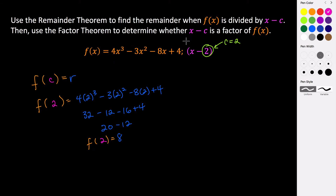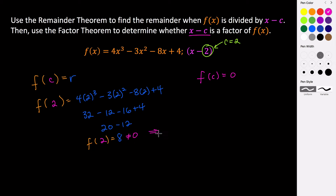So what does that tell us about x minus c? Using the factor theorem — the factor theorem says that if we divide a polynomial function by some factor x minus c, then x minus c will be a factor of that polynomial function if and only if f of c is equal to 0. So using the remainder theorem, if we end up with a remainder of 0 that tells us x minus c is a factor. Because f of 2 is not 0 — 8 is not equal to 0 — that implies that x minus 2 is not a factor of f of x.